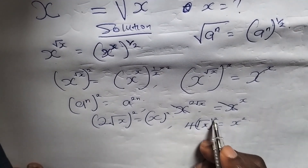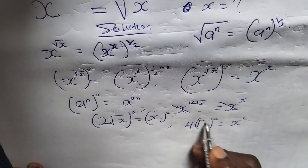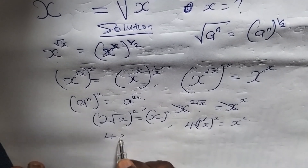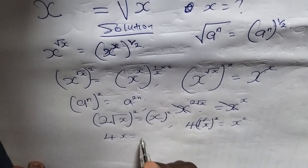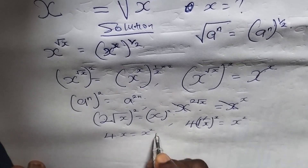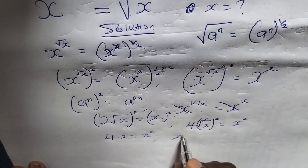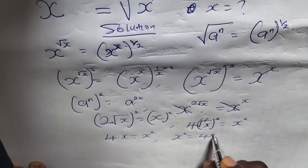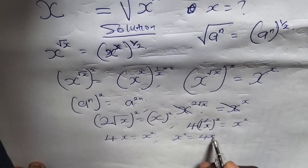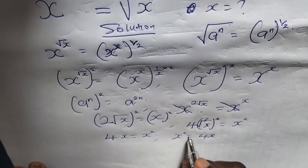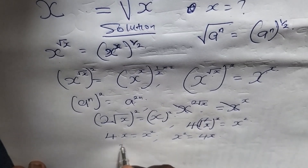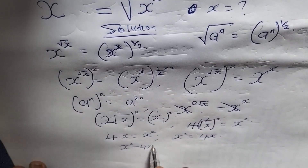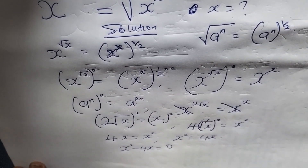Since this is having a square and this is having a root, they will cancel. So we are now having 4 times x is equals to x squared, which is x squared is equals to 4x. If we bring this to the other side, we are now having x squared minus 4x is equals to 0.